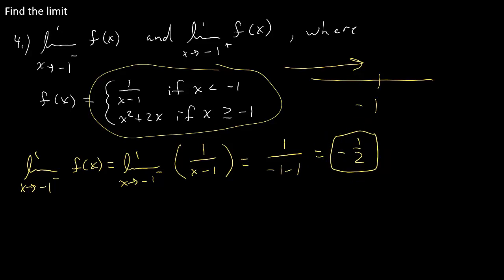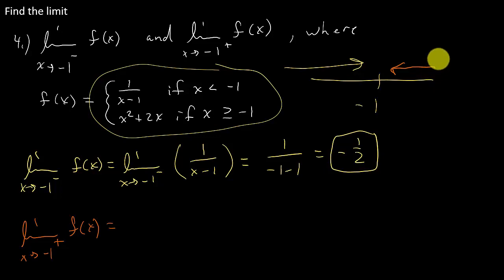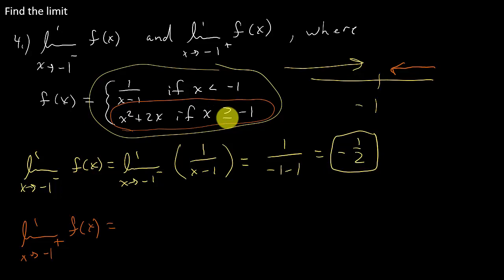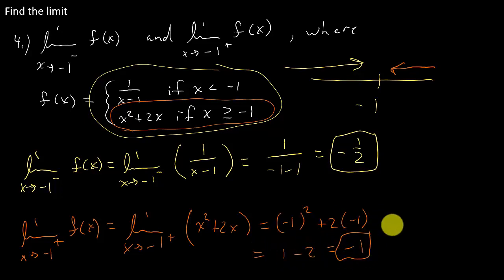Now for the limit as x goes to negative 1 from the right — we're coming in with values greater than negative 1, so we use x² plus 2x. We can just plug negative 1 in: that's negative 1 squared plus 2 times negative 1, which gives me 1 minus 2, which is negative 1. And there's your answer to that one.